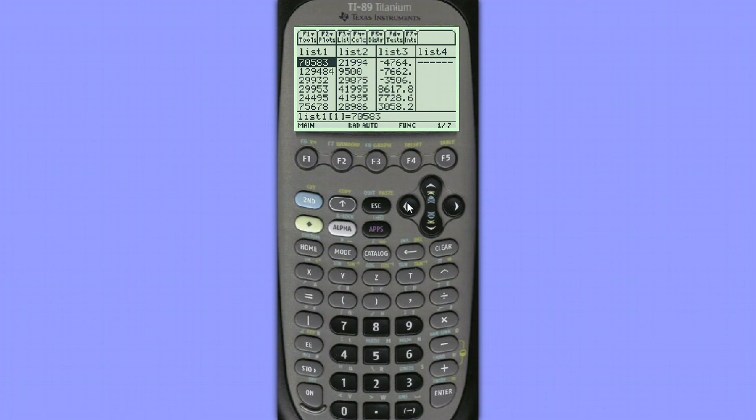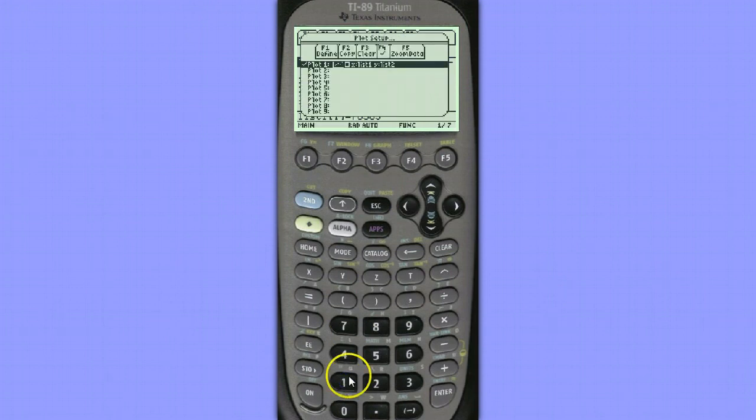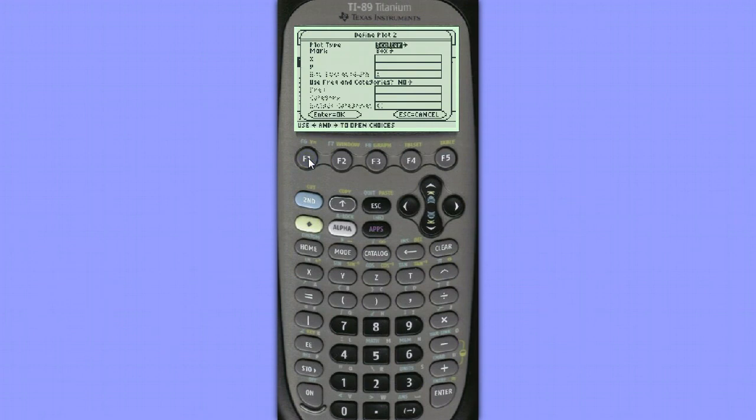Now let's create our residual plot. To do this let's hit F2, plot setup, and we'll turn off our old stat plot by hitting F4. It's nice not to clear that in case we want to use it later. I'll go down to plot 2, choose F1 define.